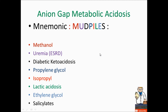Now, what are the causes of anion gap metabolic acidosis? Here is a very famous mnemonic: MUDPILES. M is for methanol, U for uremia, D for diabetic ketoacidosis, P for propylene glycol, I is for isopropyl, L is for lactic acidosis, E is for ethylene glycol, and S is for salicylate — aspirin.